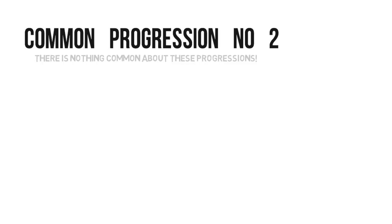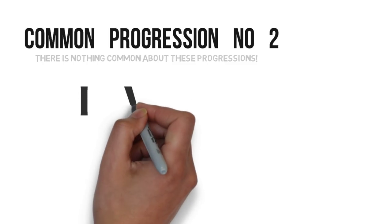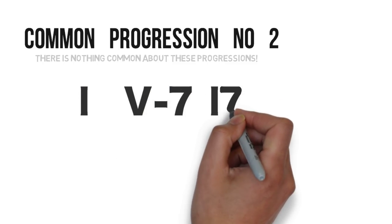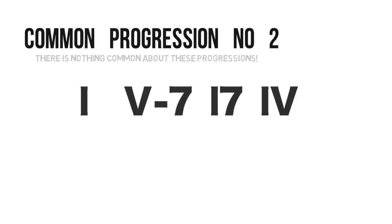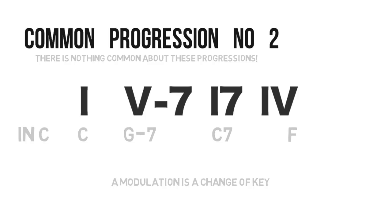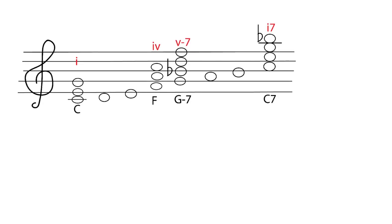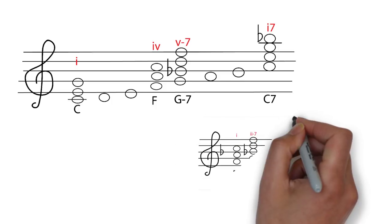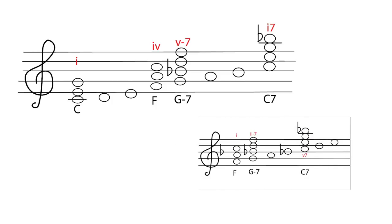Common chord progression number two: One-Five/IV-One Seven-Four. This is a very common sound, almost as ubiquitous as the two-five or two-five-one. It can be thought of as a modulation to the four chord. In C, the fourth degree of the scale — the subdominant — is F. If we look at the scale of F, we can see the two-five, which is where these chords actually come from.